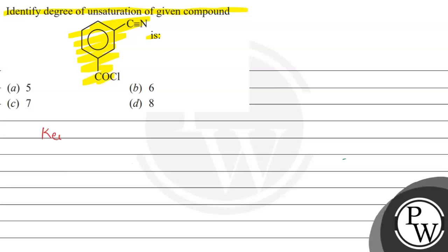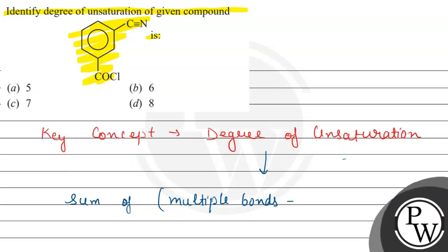First of all, let's see the key concept of this question. The key concept is degree of unsaturation. Degree of unsaturation shows the sum of multiple bonds plus number of rings.